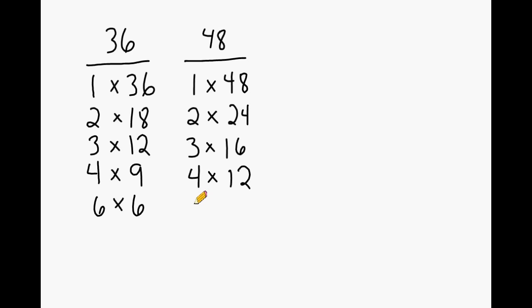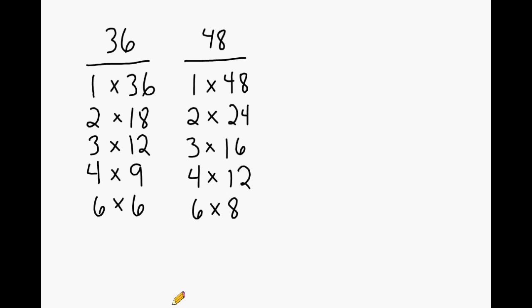Then we test 6, and 6 does work — 6 times 8 is 48. 7 does not work. Then we test 8, and 8 does work, but notice we already have 8 in our list. I could write 8 times 6, but it is the same thing as 6 times 8. When you have a reversal like that, it simply means you have found all of the factors of that number. When you come across the same factor pair but just reversed, that is a signal you have located every single factor.